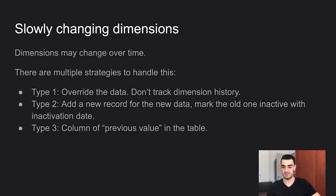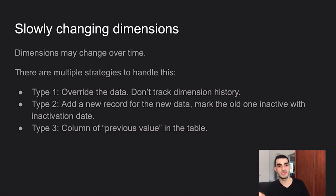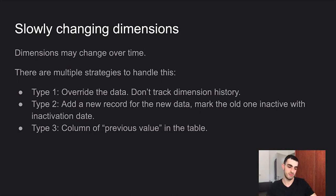Type 3, which is seldom used because it has many problems, is to add a column in the dimension table for the previous value. When a value changes you store the old value in that previous-value column and update the current column. The issues are numerous: you can only track one change, you may not know when it happened so you need a 'last changed' column, and if multiple columns change you need separate previous-value columns for each. It gets complicated very fast. There are some cases where it fits business needs, but it's generally avoided.